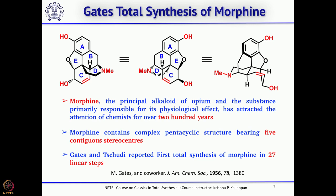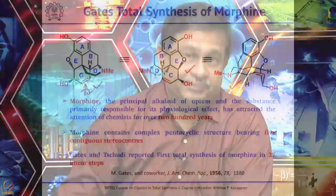Now let us see how this molecule was synthesized and reported for the first time. As mentioned, Gates was the first to report the total synthesis of morphine, in 1952. You can imagine it took almost 150 years since its isolation and 27 years after its structure was proposed by Robert Robinson to complete the first total synthesis. Morphine has 5 contiguous stereocenters, and the first synthesis was reported by Gates in about 27 steps.